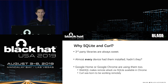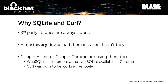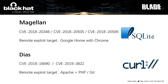Why did we target these two libraries? First, third-party libraries are always a sweet target — less code, focused on functions, and almost every device has them installed. Most importantly, our goal was to break Google Home, and Google Home and Chrome are using both libraries. Web SQLite makes remote attacks via SQLite available in Chrome, and curl was built to work remotely. After research, we found three security vulnerabilities in SQLite — named Magellan — allowing remote code execution on Chrome and Google Home. We also found two vulnerabilities in curl allowing remote attacks on Apache, PHP, and Git.